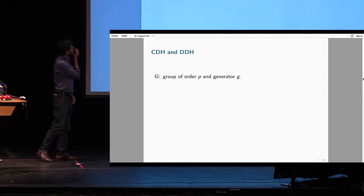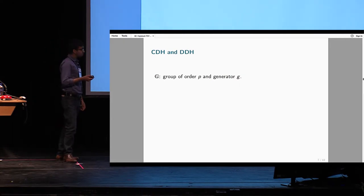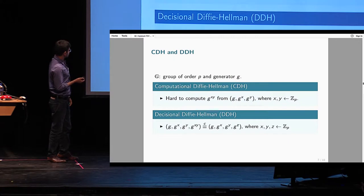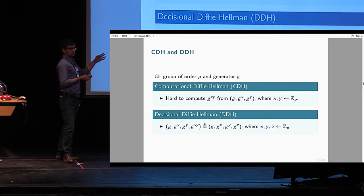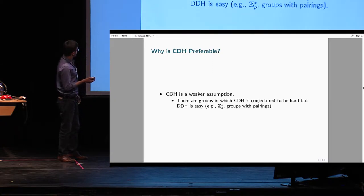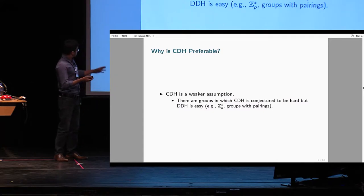Let me review the notion of CDH and the related notion of DDH. Both assumptions are defined with respect to a group G. The CDH assumption says that from G, G^x, and G^y it is hard to compute G^(xy), where G is a random generator and x and y are random exponents. The DDH assumption says that the joint distribution of G, G^x, G^y, and G^(xy) is pseudorandom. We care about building TDFs from CDH because CDH is a weaker and more trustworthy assumption — we have examples of groups that are plausibly CDH-hard but provably not DDH-hard.